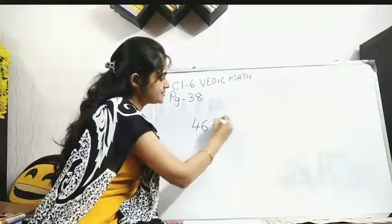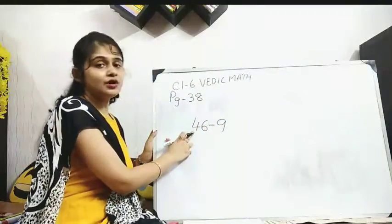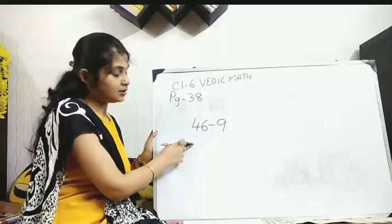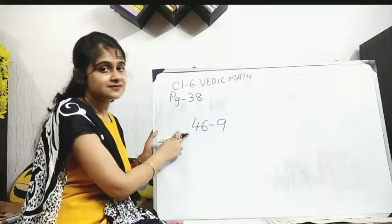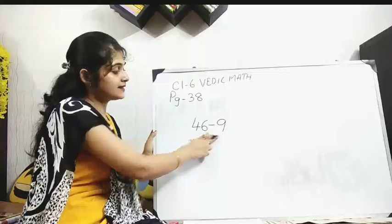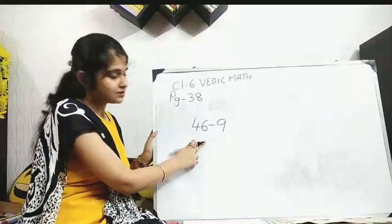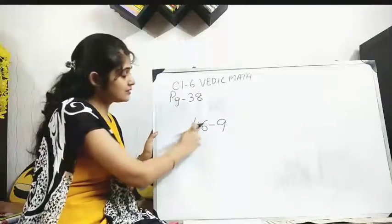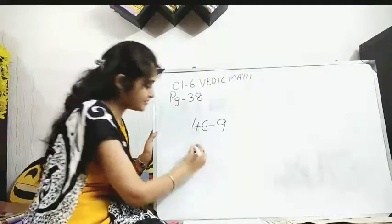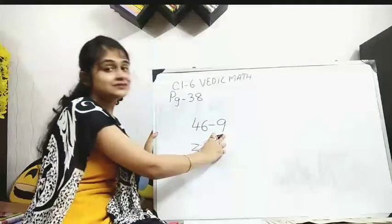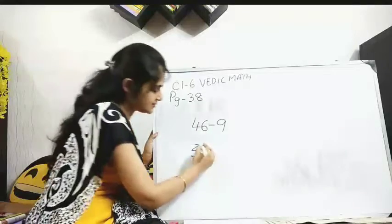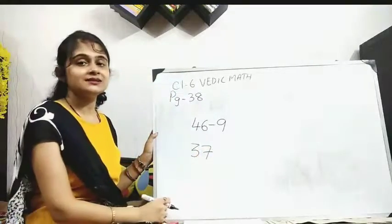46 minus 9. So 4. In the lower part what you are getting? 0. That means this is match. 6 and 9. 9 is coming at the lower part. That means this is mismatch. So when this is mismatch, the previous number will be 3. 9's complement? 1. 6 plus 1? 7. Your answer is 37.